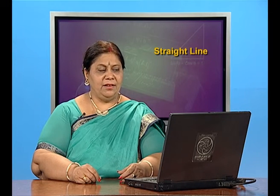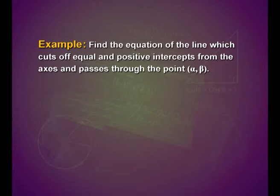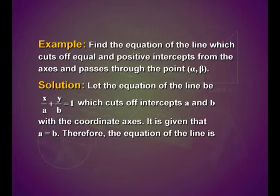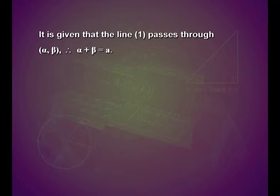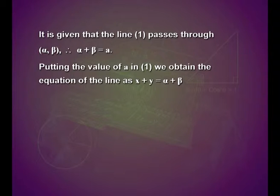We have one more interesting example: find the equation of the line which cuts off equal and positive intercepts from the axes and passes through the point (α, β). Let the equation of the line be x upon a plus y upon b equals 1. It is given that a equals b, so the equation becomes x plus y equals a — call this equation 1. Since the line passes through (α, β), we have α plus β equals a. Substituting into equation 1, we get x plus y equals α plus β.